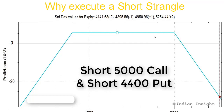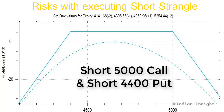However, if prices move drastically — for example, going to 5100 or 5200 on the upside, or falling to 4300 or 4200 on the downside — you will start losing money. So the motivation behind executing a short strangle is to benefit from a range-bound move. If you think the stock will remain range-bound, you can execute a short strangle.